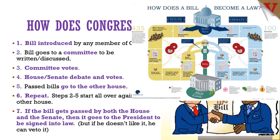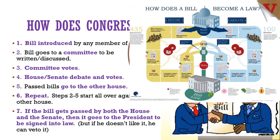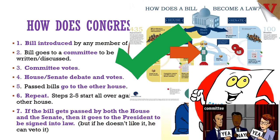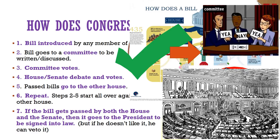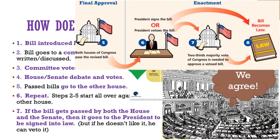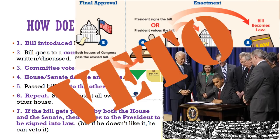The process is only halfway done after one chamber approves the bill. Then it goes to the other house of Congress. If it started in the Senate, it goes to the House committees and then the full House of Representatives for approval. If it started in the House, it gets sent to the Senate for their committees and a majority vote. That is why steps 2 through 5 start all over again. Once approved by both the House and Senate, the bill goes to the President to be signed into law — but he can veto it if he doesn't want to, which starts the process all over again.